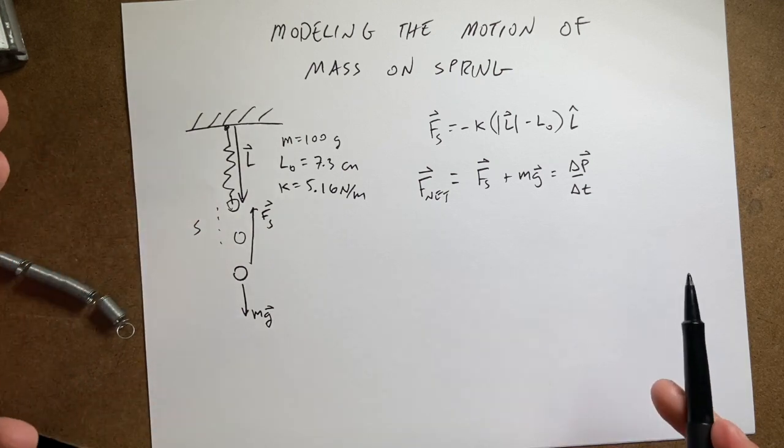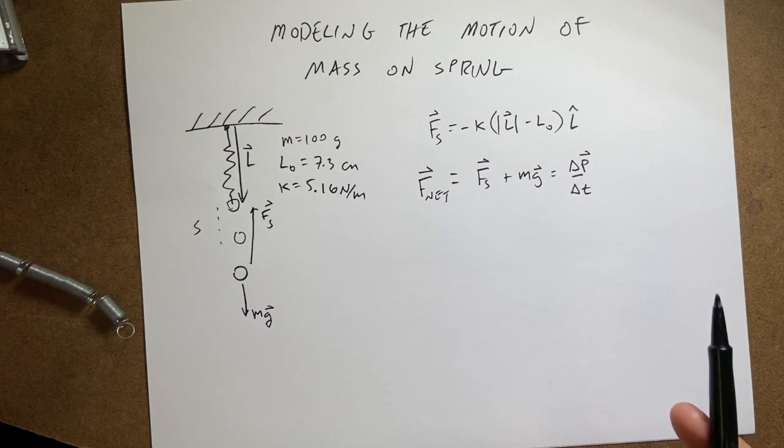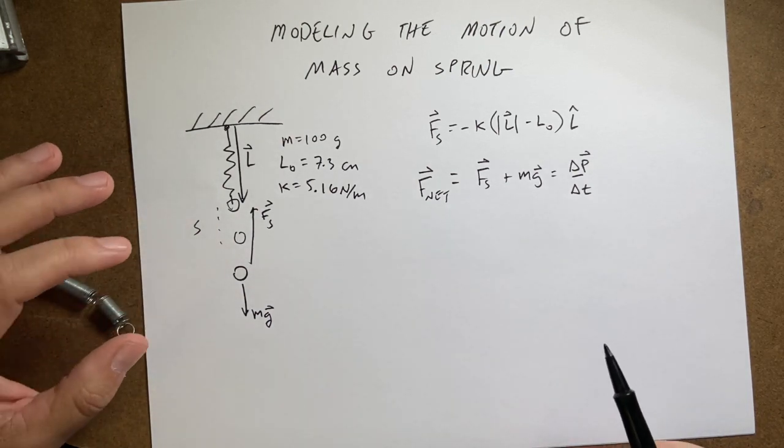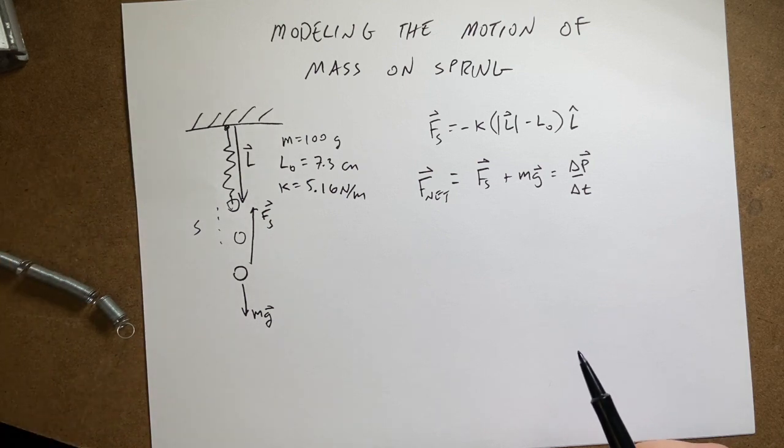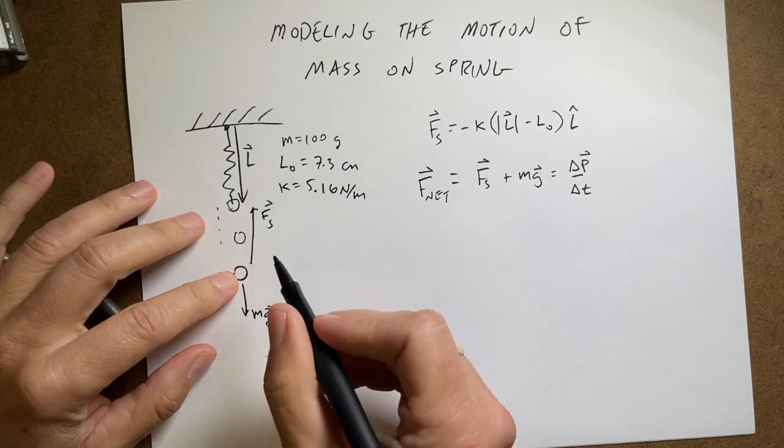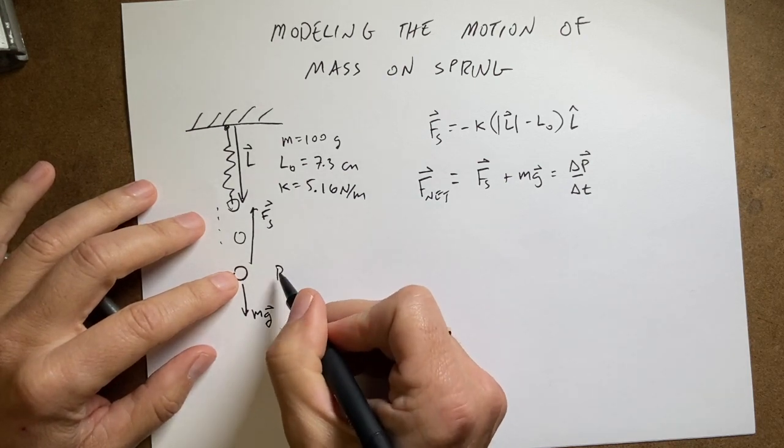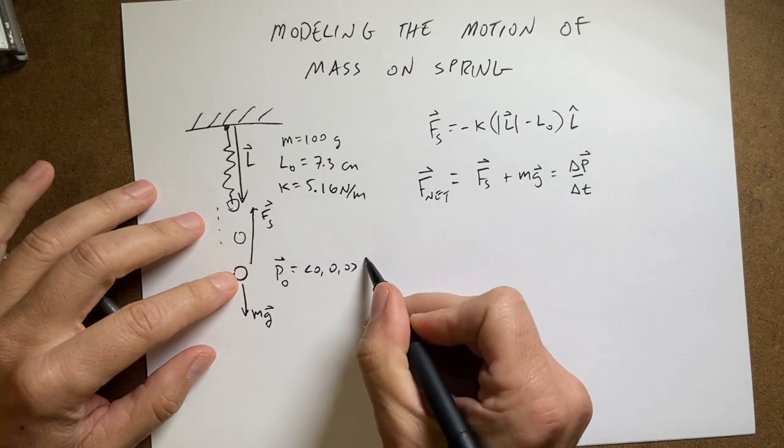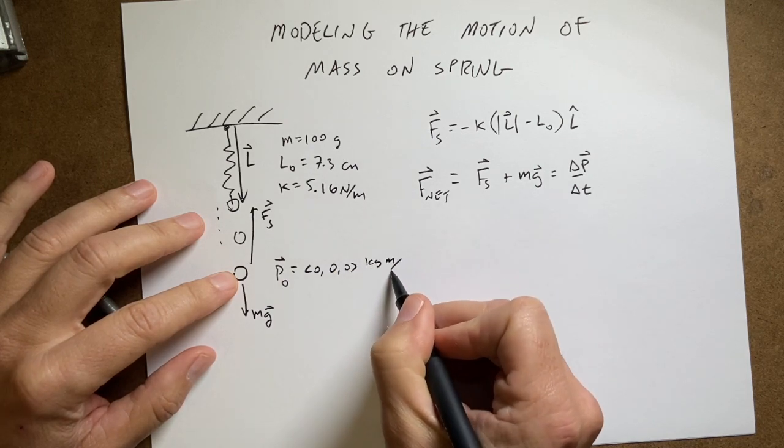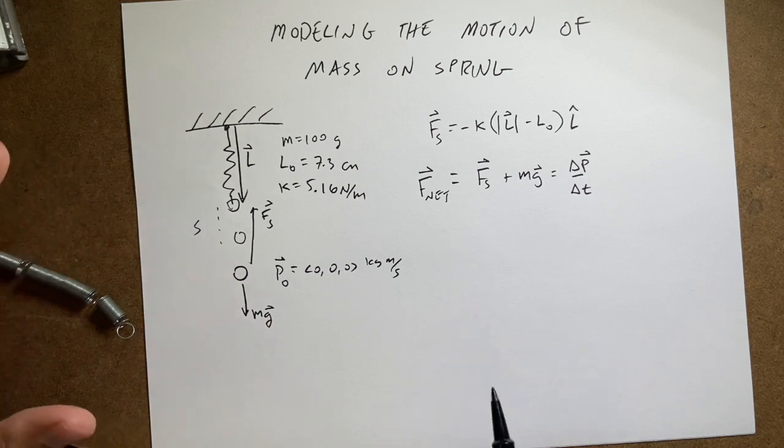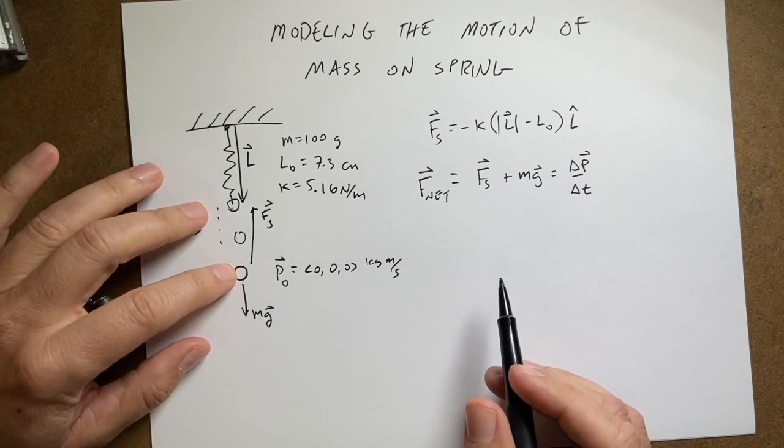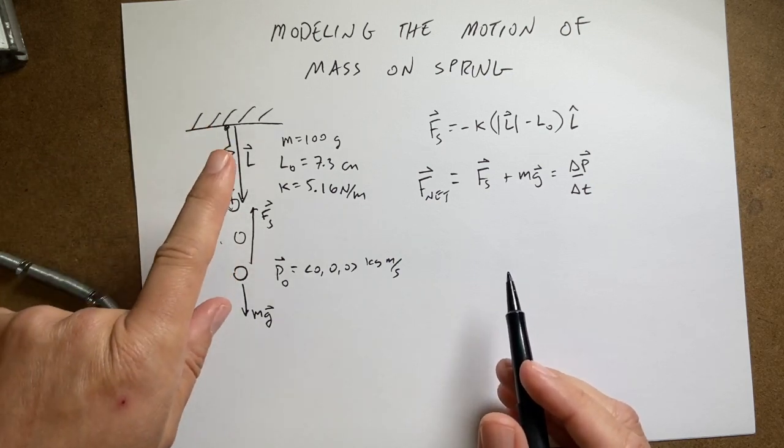Now, could I find the change in momentum for this based on that equation? And the answer is not really, because let's think about what happens. If this is true and it starts at p equals zero, the initial momentum p zero equals the zero vector. Then in a little bit time later, it's going to have an upward momentum because the net force is up.